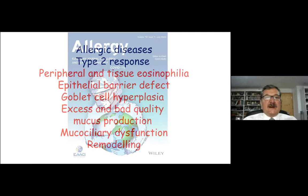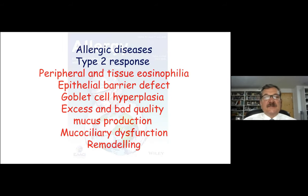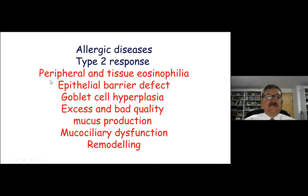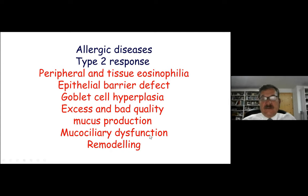I'll talk about the epithelial barrier hypothesis. For this, we have to first know what allergic diseases are. There is a type 2 response very common in allergic diseases, and this type 2 response is characterized with peripheral and tissue eosinophilia, epithelial barrier defect, goblet cell hyperplasia, excess and bad quality mucus production, mucociliary dysfunction, and remodeling.